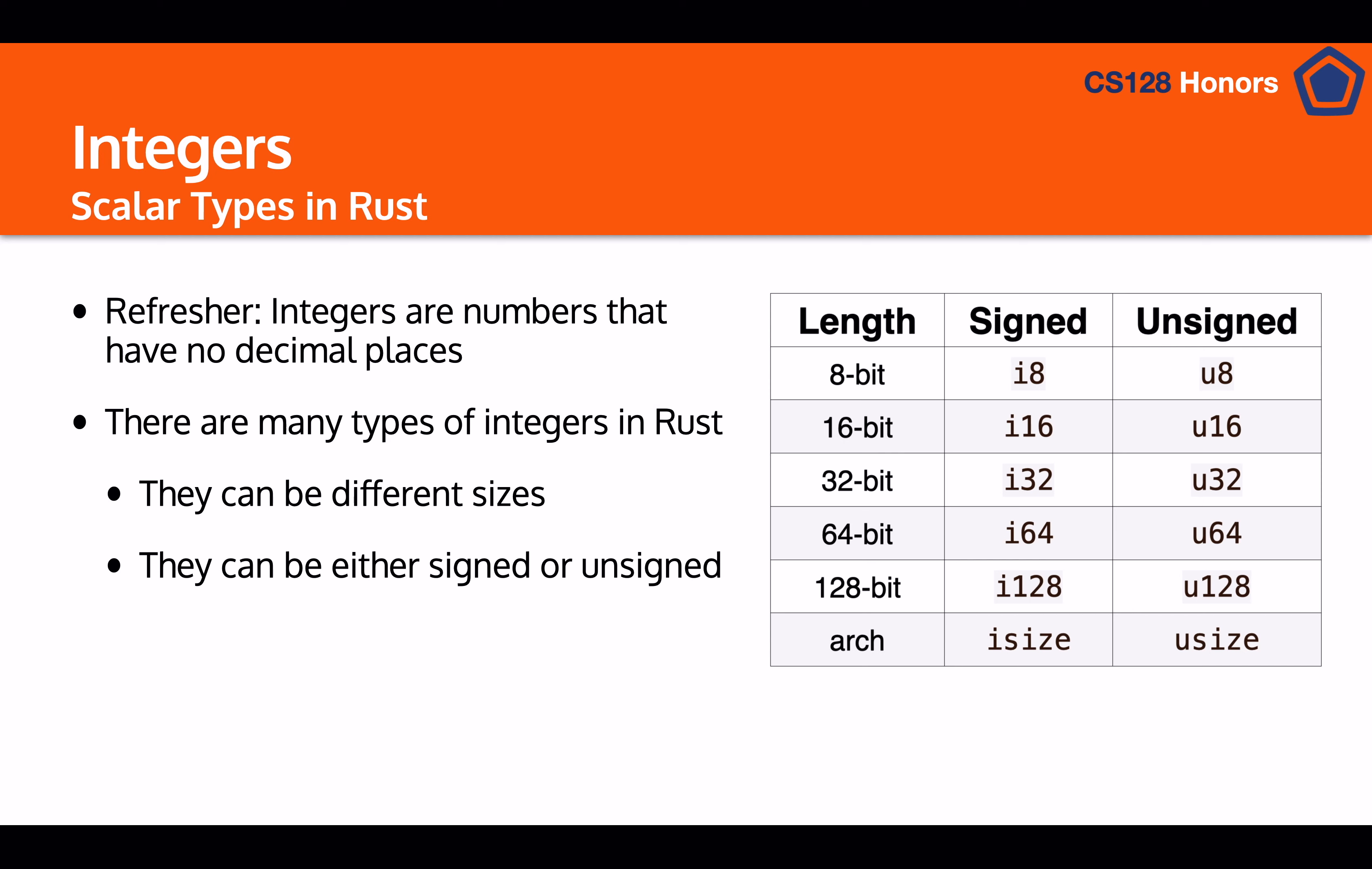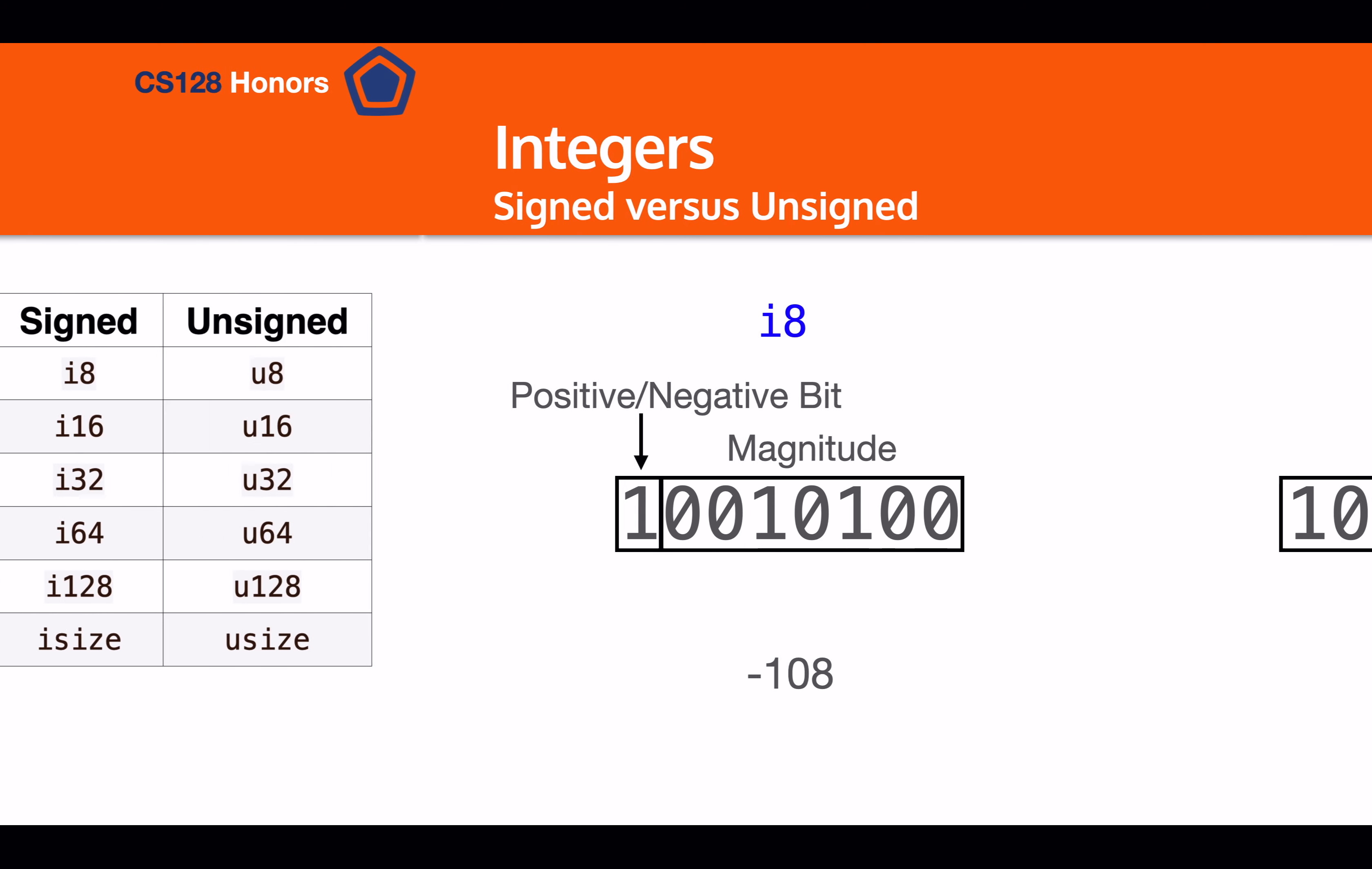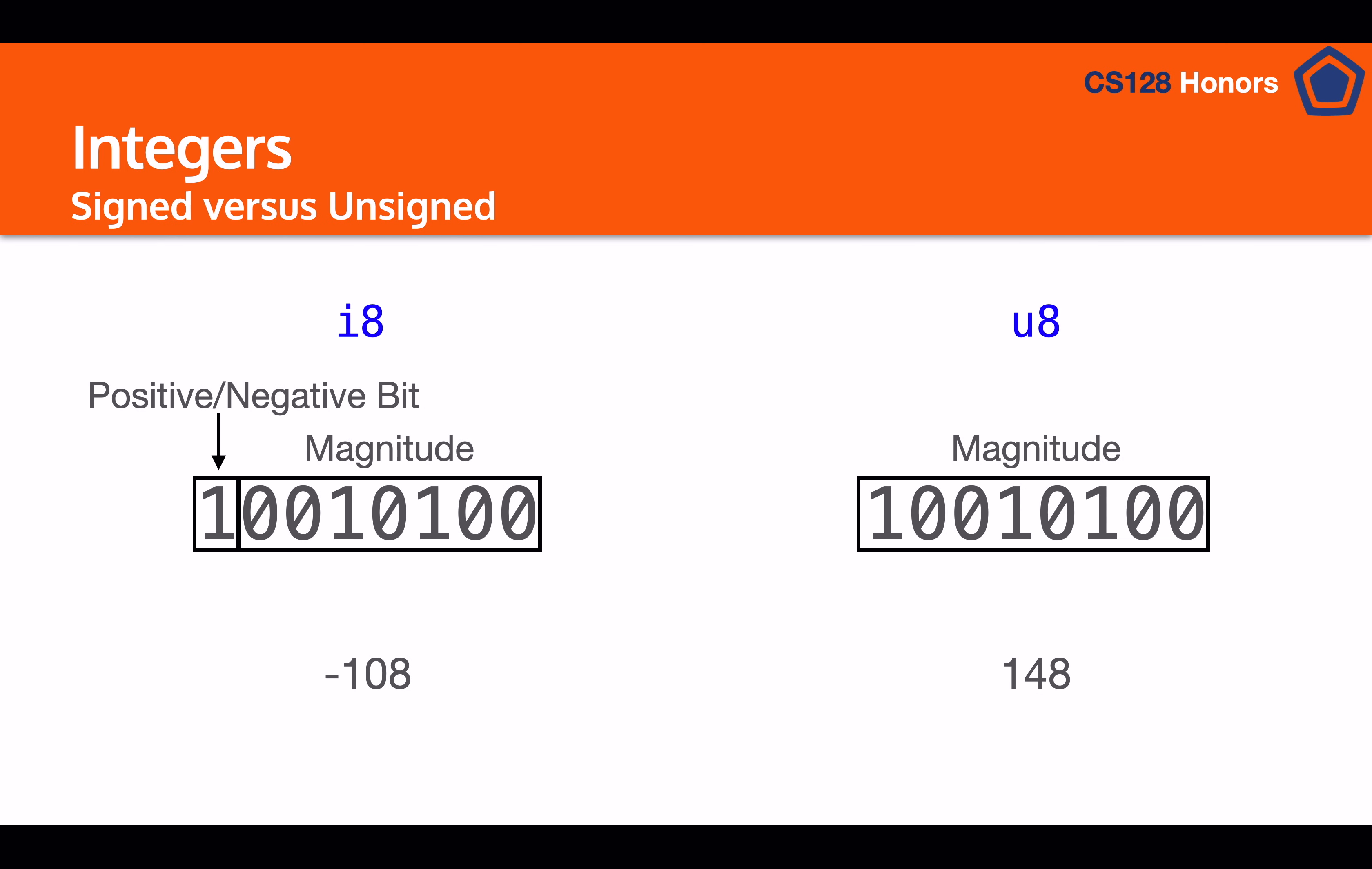So then, we also have the question of what does signed versus unsigned mean? Well, signed versus unsigned means the signed integers have one bit reserved for whether it's positive or negative. And the rest of the integer is used to determine the size of that integer. Whereas with an unsigned integer, it can be twice as large on the positive end of a signed integer, but it cannot go into the negatives.